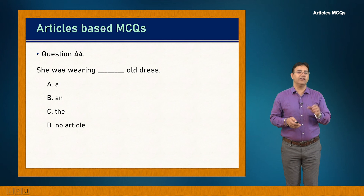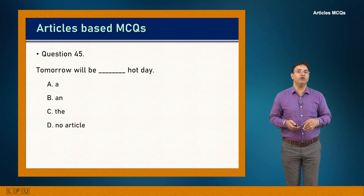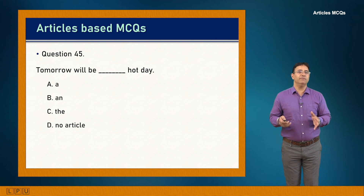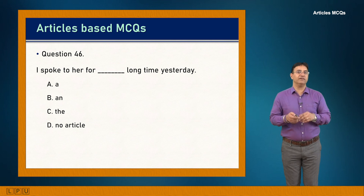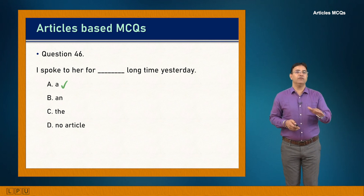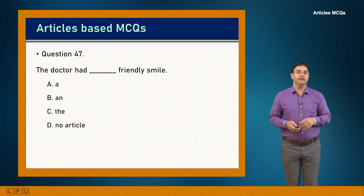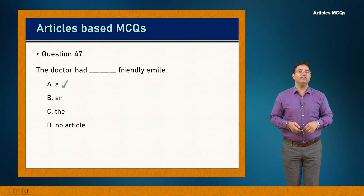Question 44: She was wearing dash old dress. 'Old' starts with a vowel sound, so 'an' is used. Answer is B: 'She was wearing an old dress.' Question 45: Tomorrow will be dash hot day. 'Hot' starts with a consonant — 'a hot day.' Answer is A. Question 46: I spoke to her for dash long time yesterday. Answer is A: 'I spoke to her for a long time yesterday.'